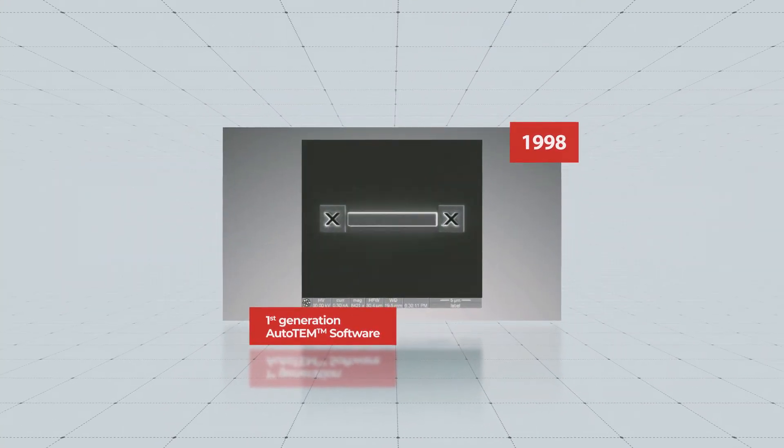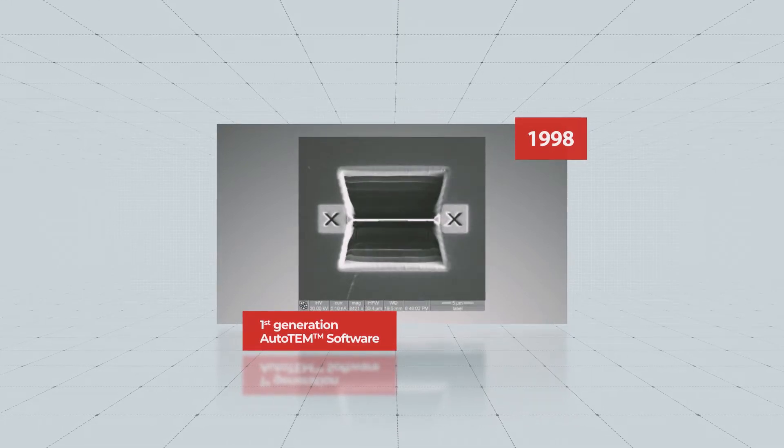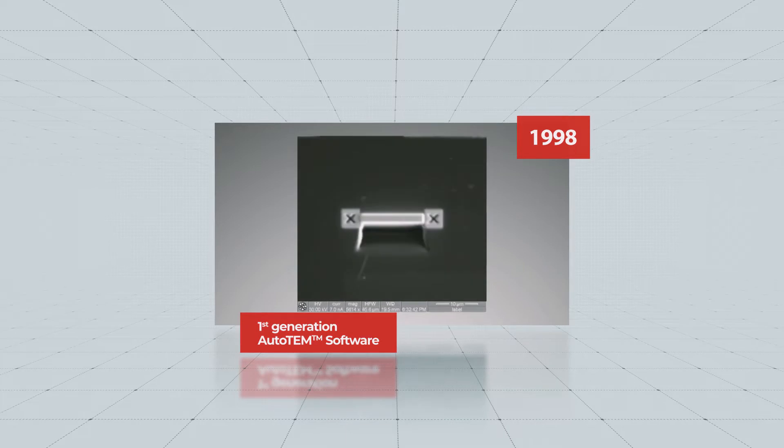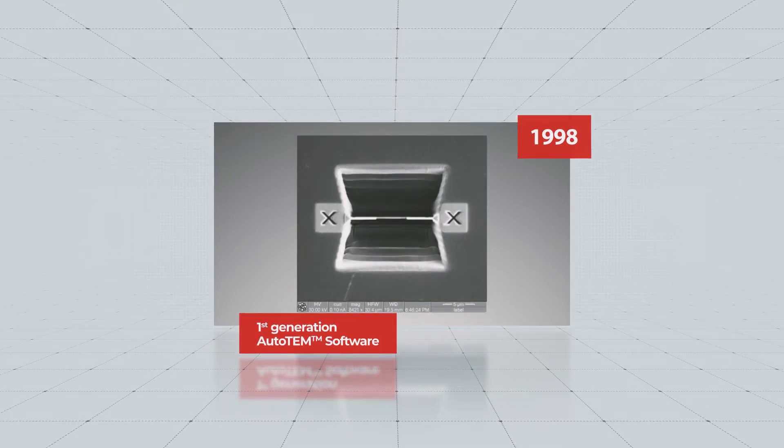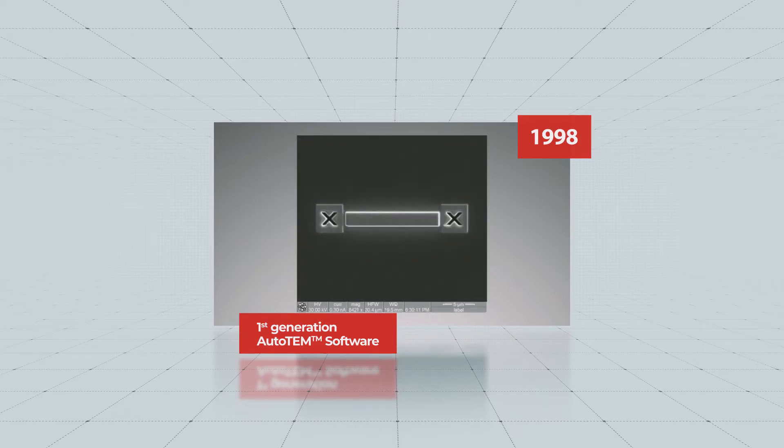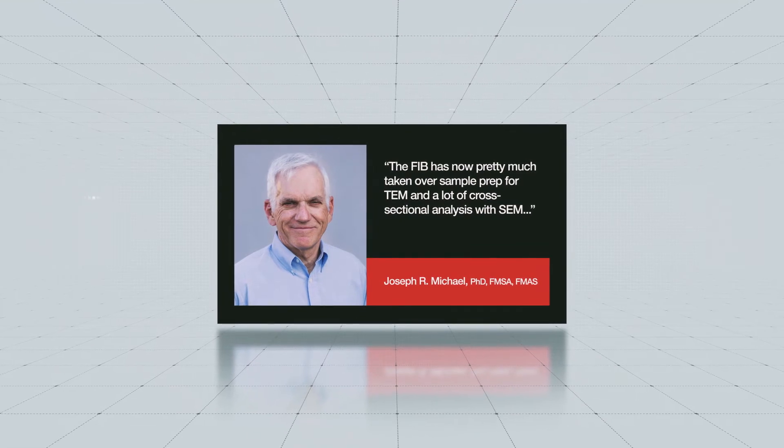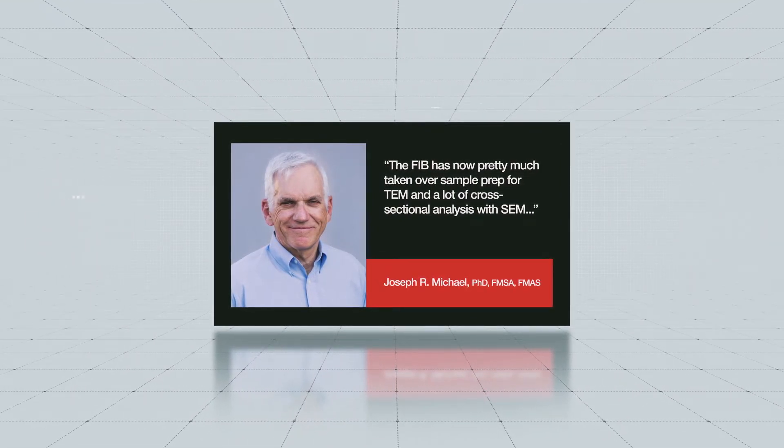As both industry and academia began to adopt TEM sample preparation using dual beam systems, there became a demand for higher throughput. In 1998, Thermo Fisher addressed this need for automation with the first generation AutoTEM software. The FIB has now pretty much taken over sample prep for TEM and a lot for cross-sectional analysis with SEM and things like that.